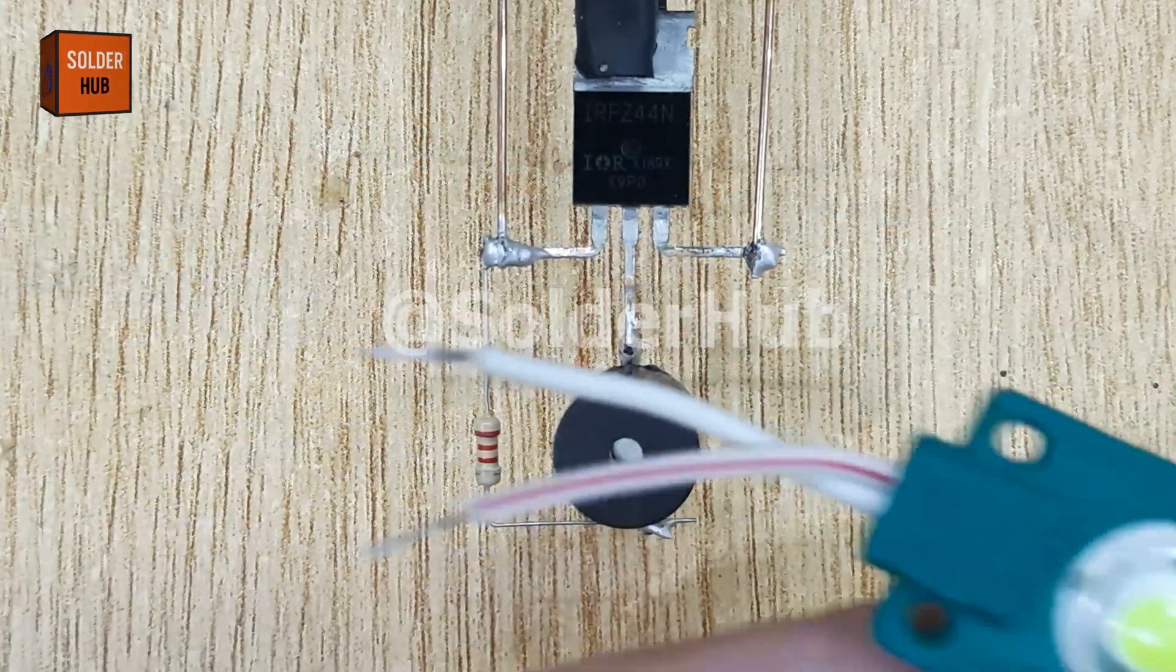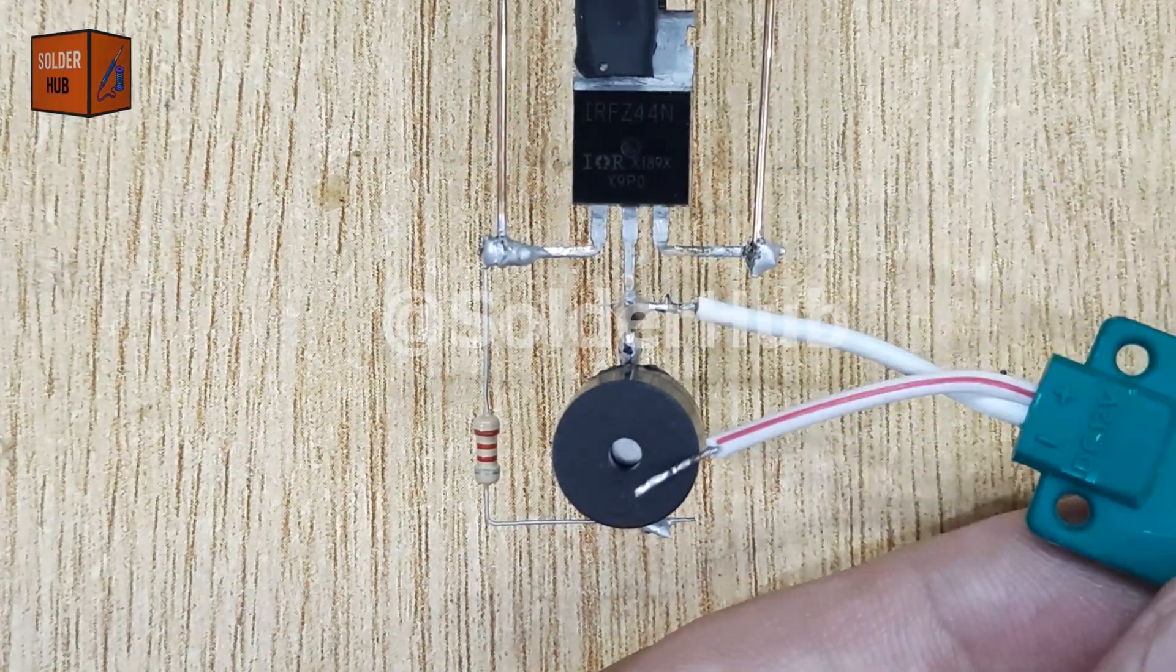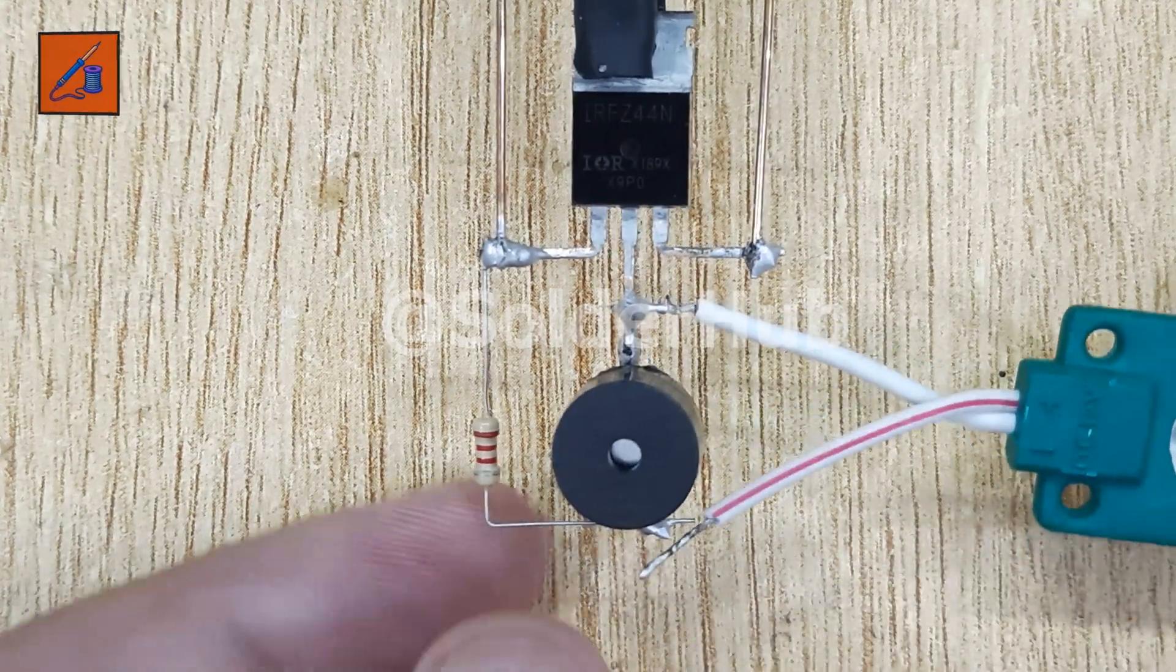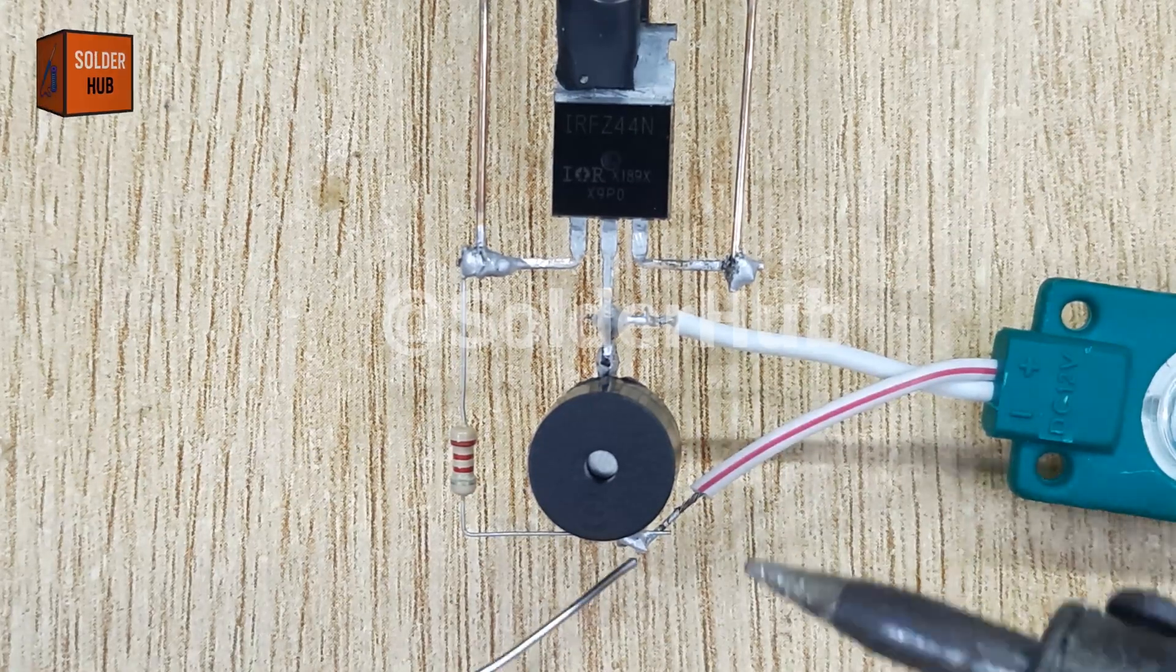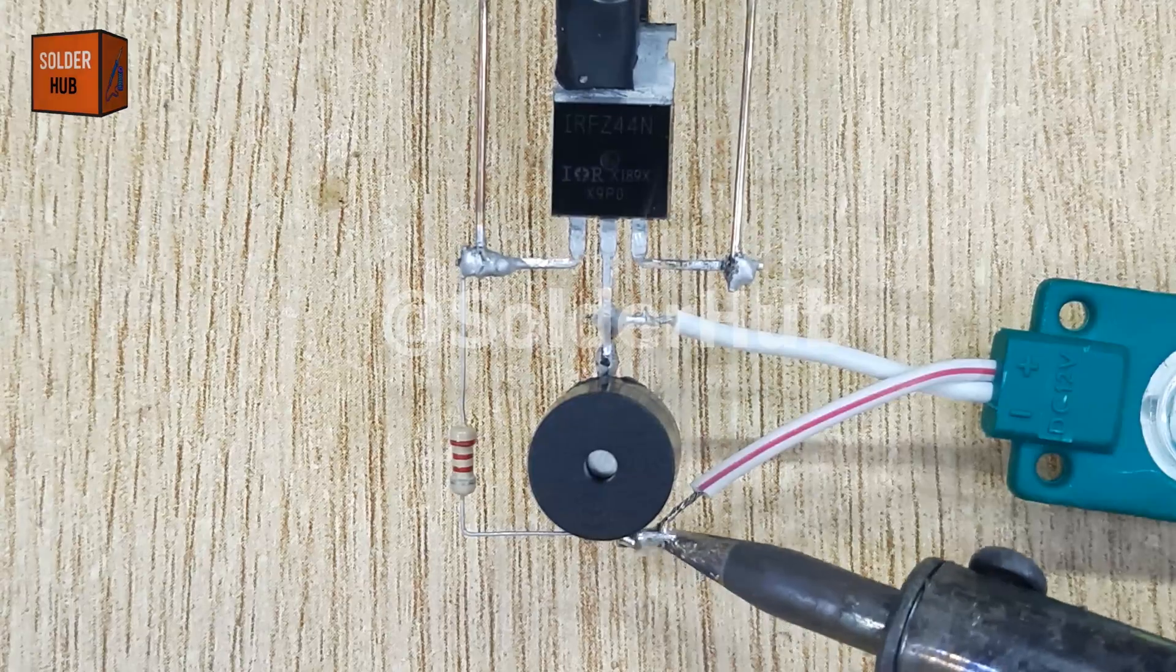Now, I bring in a 12-volt LED. This LED is much brighter than the seven-color auto-LED and will act as the main strobe light. I solder its negative pin to the drain pin of the MOSFET and the positive pin to the positive pin of the buzzer. This way, both the LED and buzzer share the same power line.